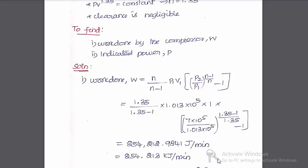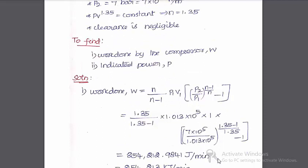Work done by the compressor is 254,212.9841 Joule per minute.